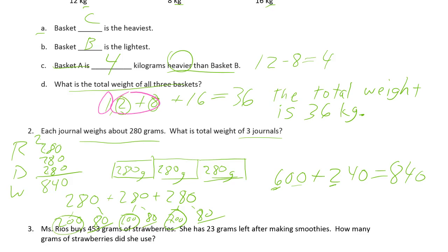We know your answer statement now. We have our picture, done. We wrote our number sentence, done. And now we can write our answer statement, done. 3 journals total 840 grams.